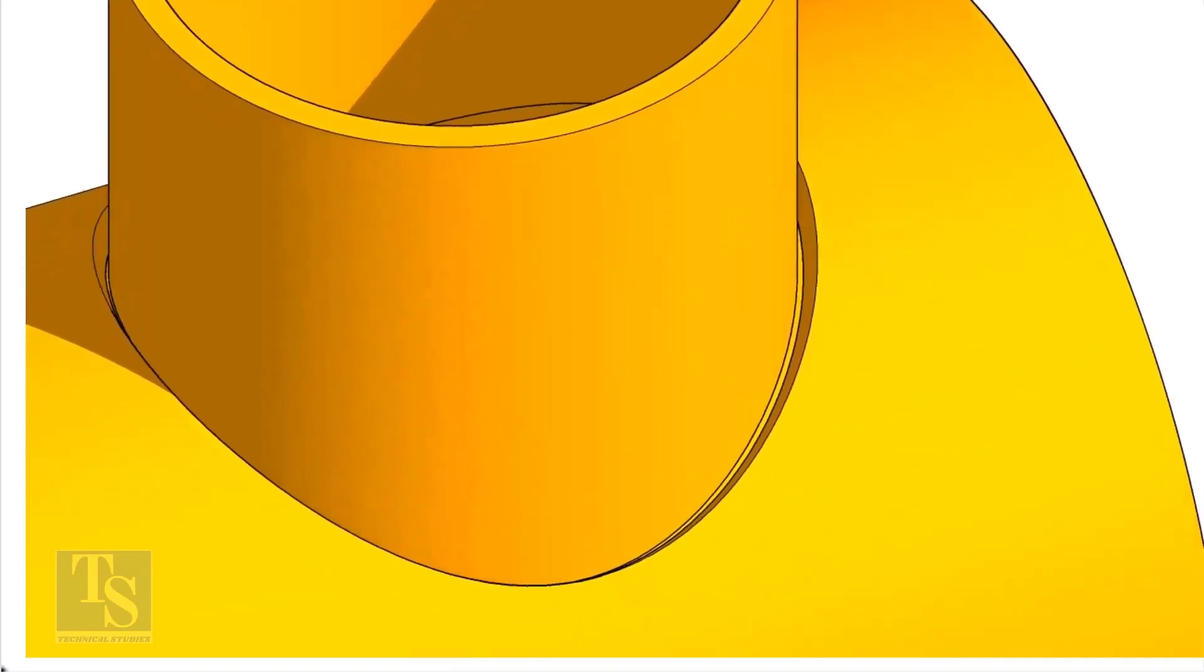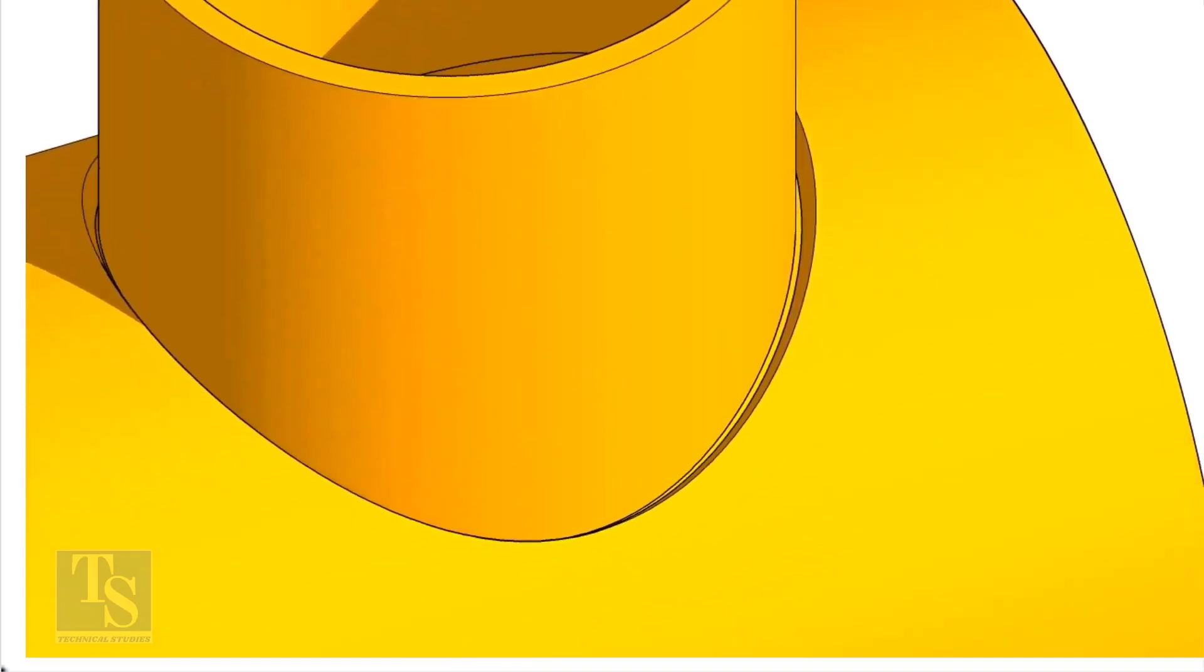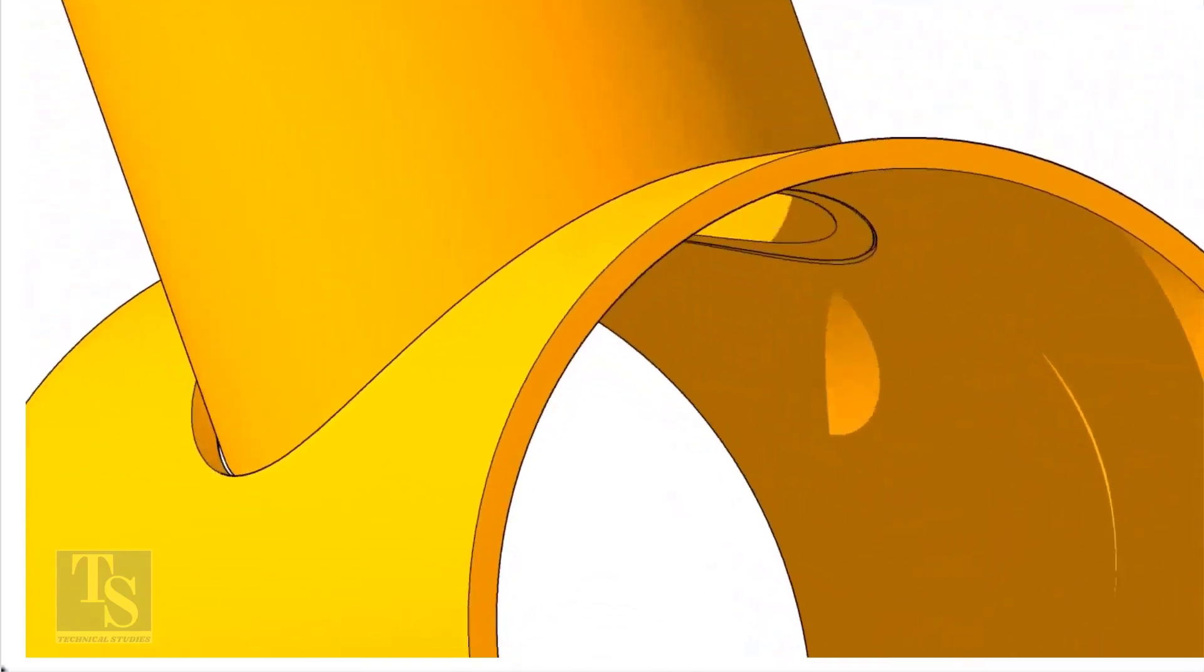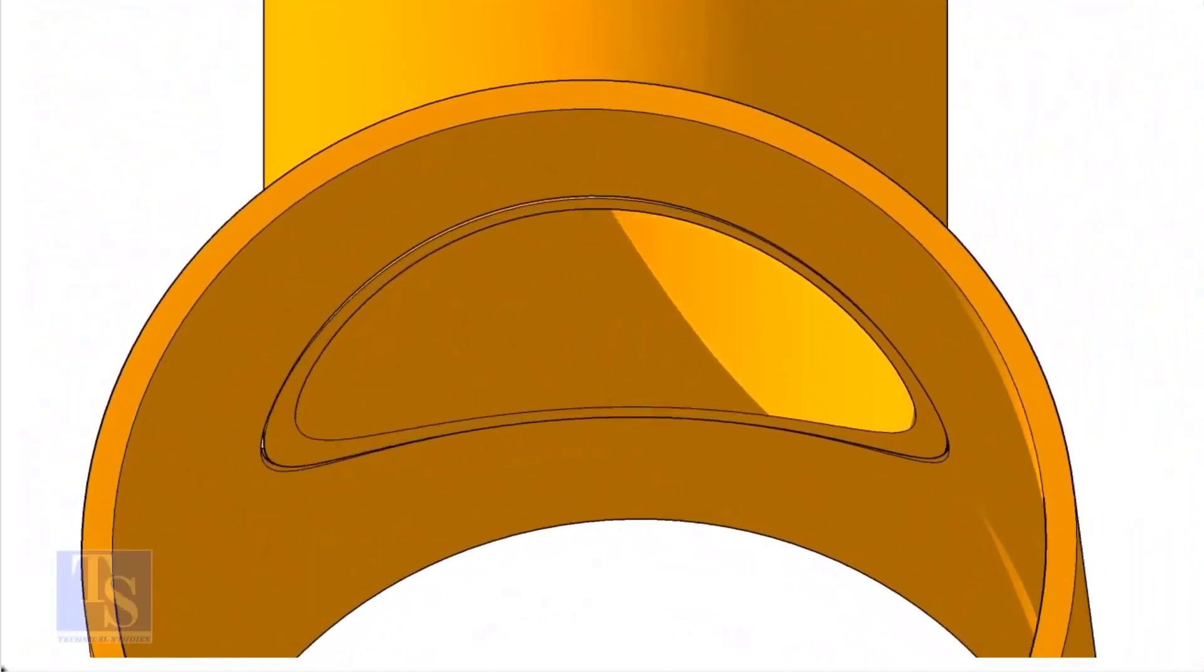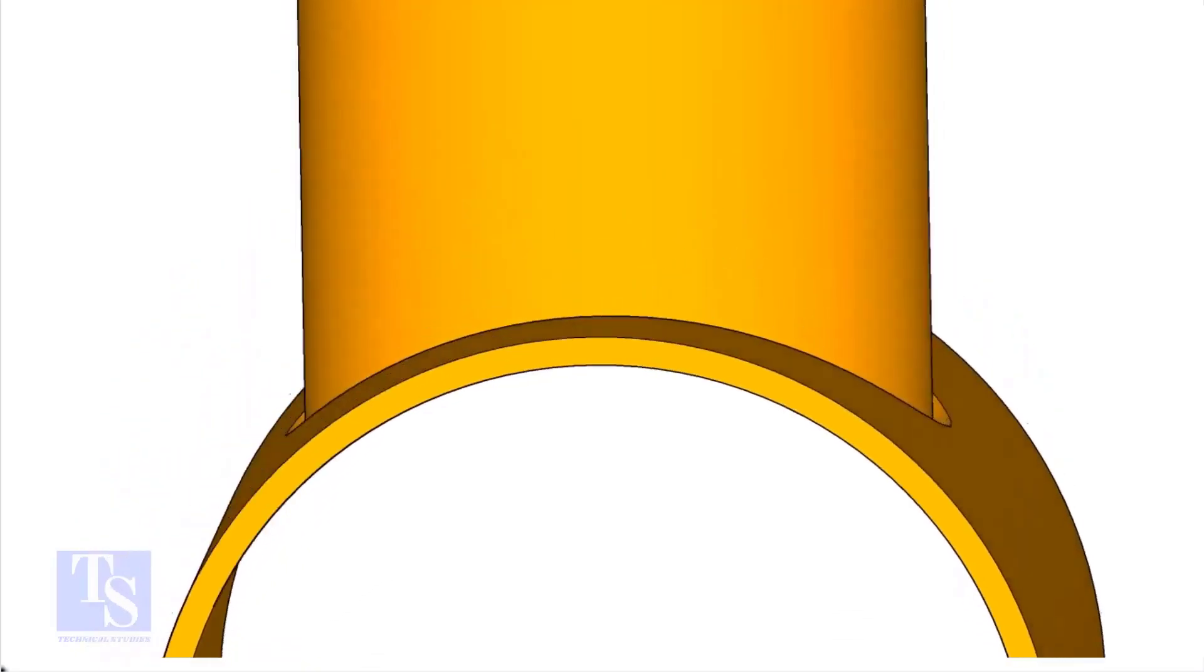On the branch pipe, there is no bevel preparation, but the cut-back cut is done. The end of the branch is level with the inside diameter of the header pipe.